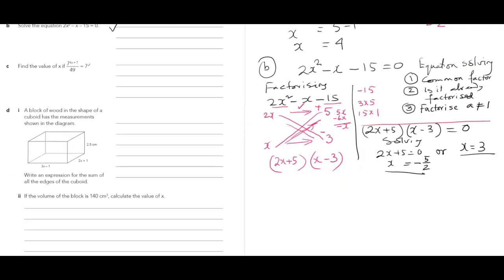I will move to C. Within 10 minutes, how many problems I can solve. Find the value of x if 7 to the power 4x plus 7 over 49 gives you 7x squared. That doesn't seem to be an easy problem. But one thing I identified. Those are the base. Maybe this will be helpful. Identify the base.